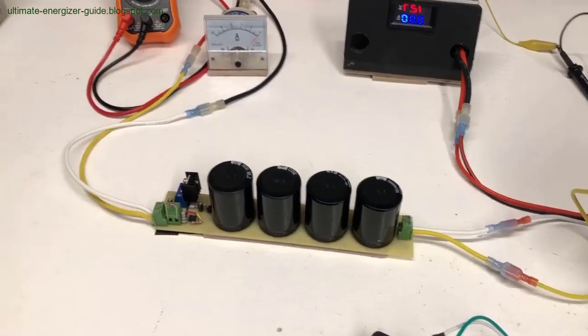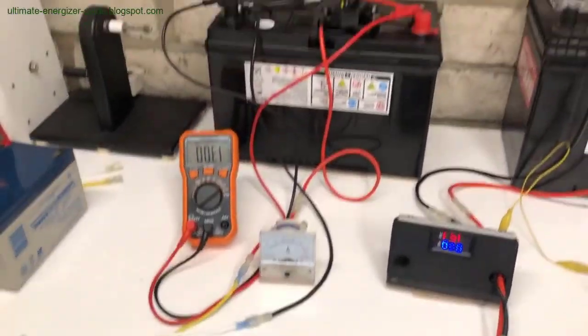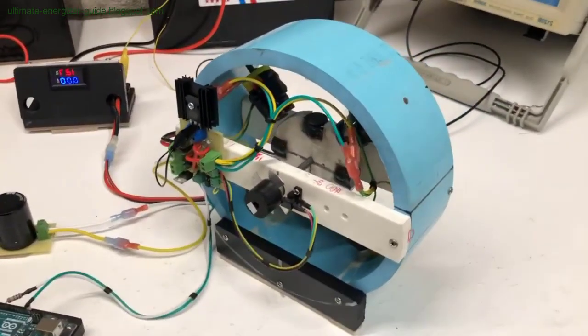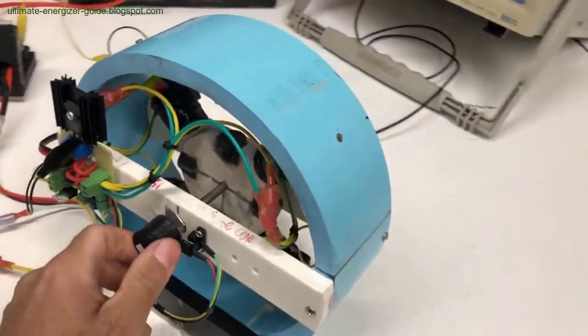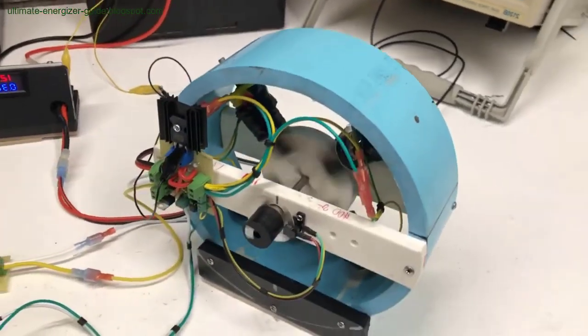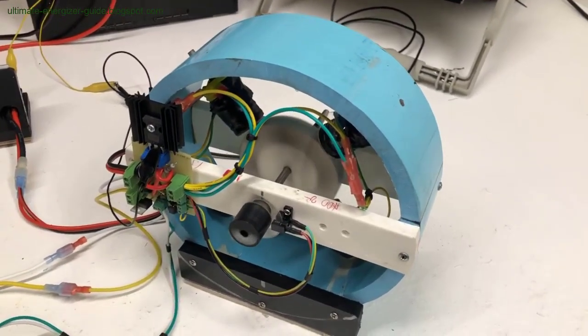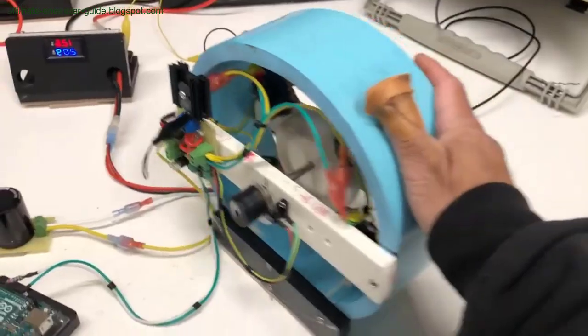Robert Adams's generator is a sophisticated free energy device that cleverly manages the lens force, a reactionary force generated when voltage and current are induced in a coil. This force typically opposes the motion of the magnet in the rotor, thereby hindering its rotation. Adams's ingenious solution involved the precise timing of circuit disconnection at the peak of voltage.